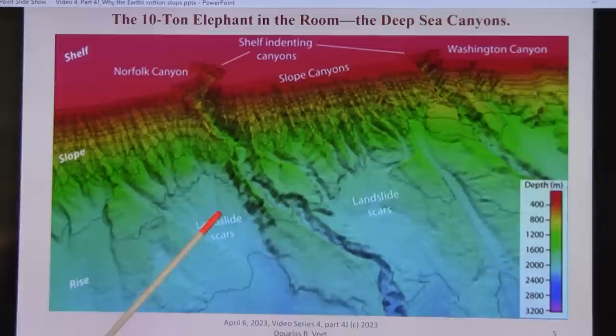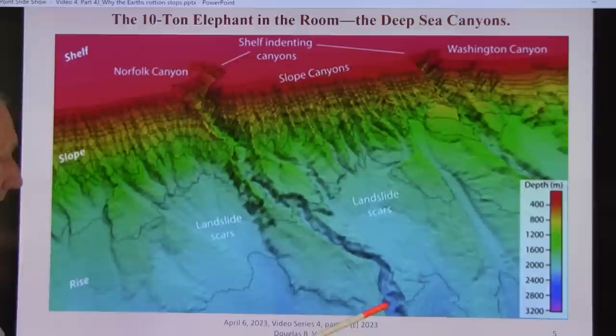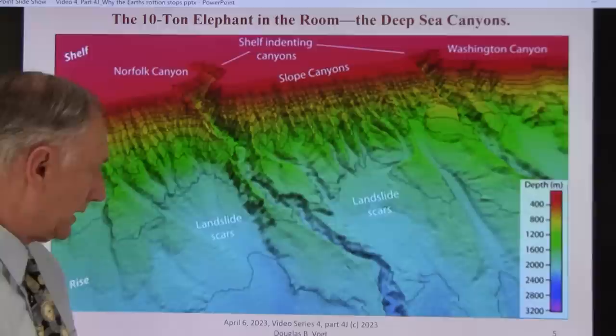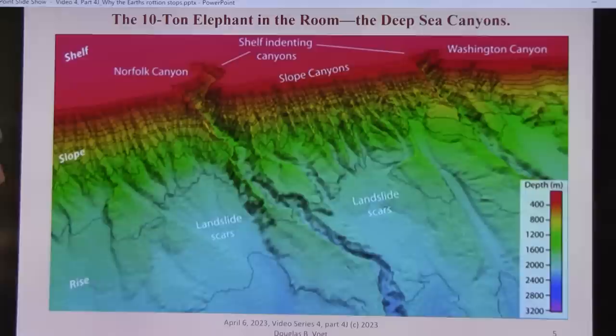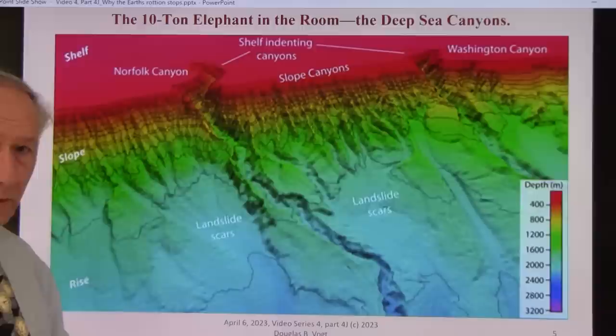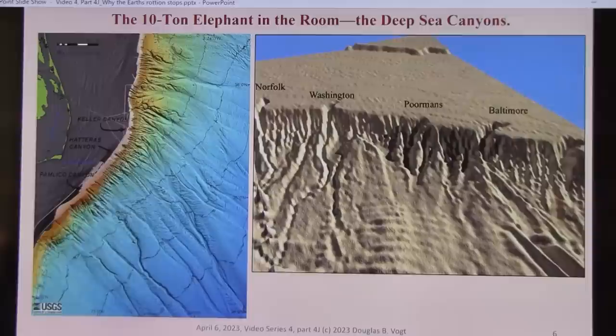Fresh water is lighter than salt water. And the only way this could have cut a channel, this is the Norfolk Channel on the East Coast, all the way down to the bottom of the Atlantic, which goes down about 13,000 or 14,000 feet. So the only way they could be is that there was no salt water or ocean water here for a brief moment in time. And you're going to know the mechanism.